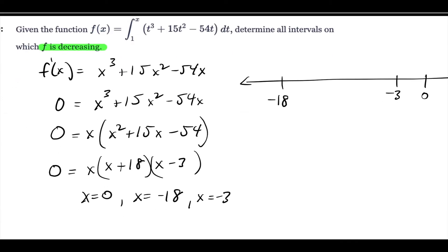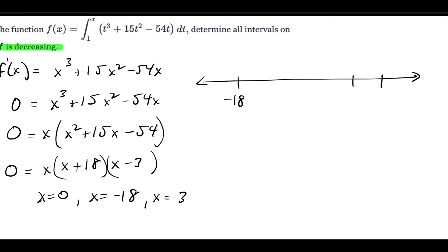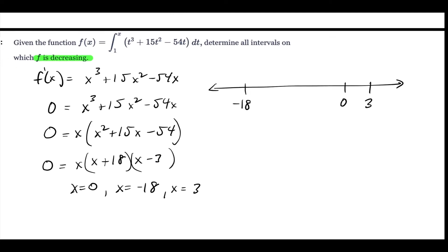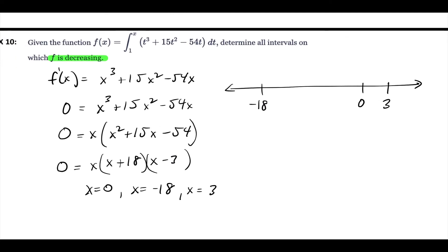We use the Second Fundamental Theorem to just replace the t's with x's. Let me fix that before I forget — these two will switch spots. So I get f prime is equal to x cubed plus 15x squared minus 54x.